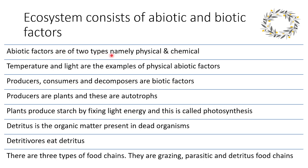Abiotic factors are of two types, namely physical and chemical. Temperature and light are examples of physical abiotic factors. Producers, consumers and decomposers are biotic factors. Producers are plants and these are autotrophs. Autotrophs are the organisms which can synthesize their own food materials.